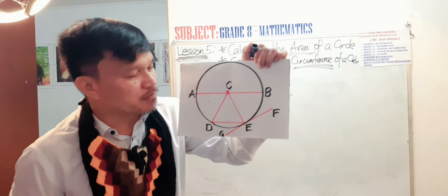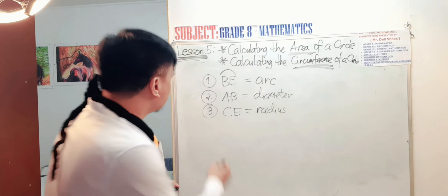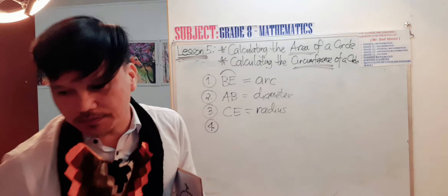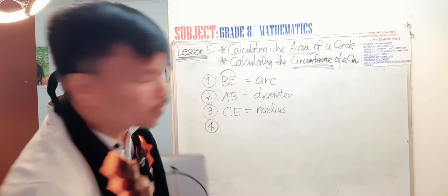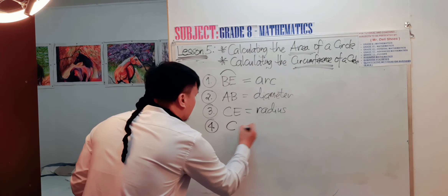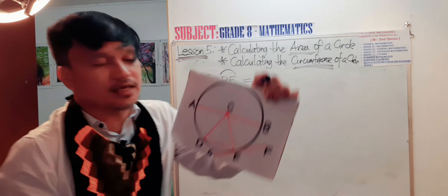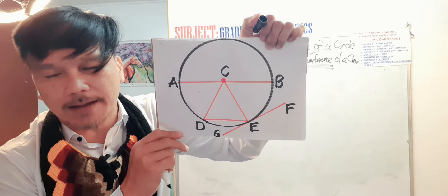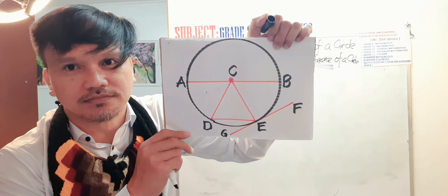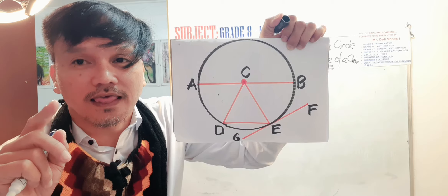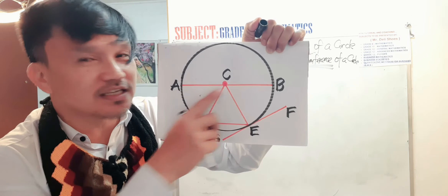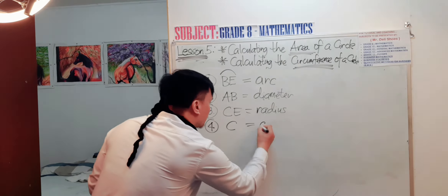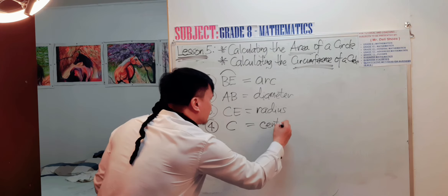Question number four: what do you call point C in this diagram? Point C is called the center of the circle. Question number five: what about D-E? What does this line segment D-E, from D to E, called?